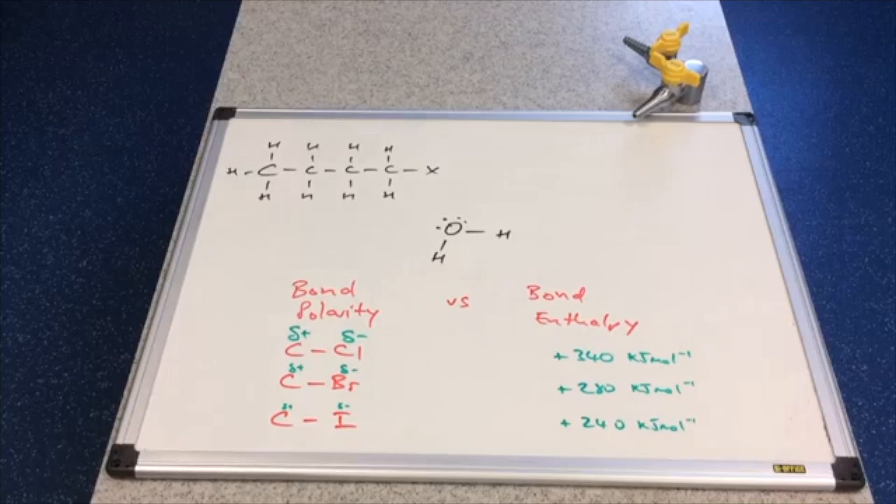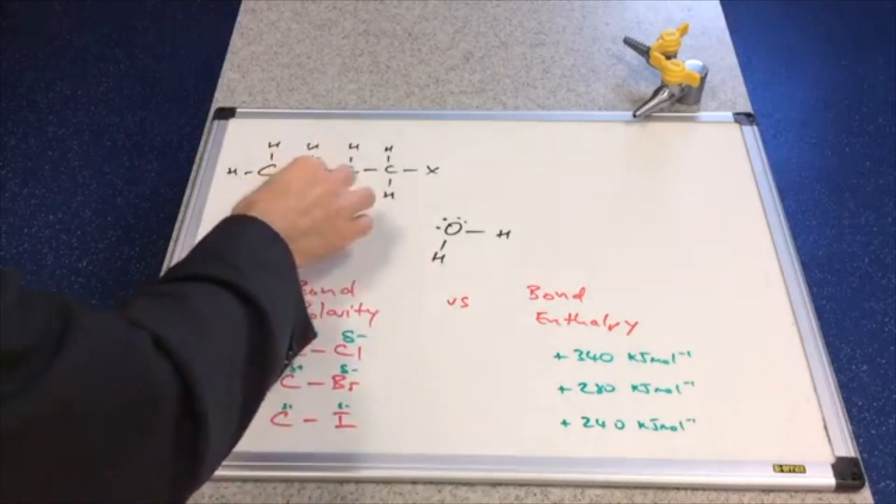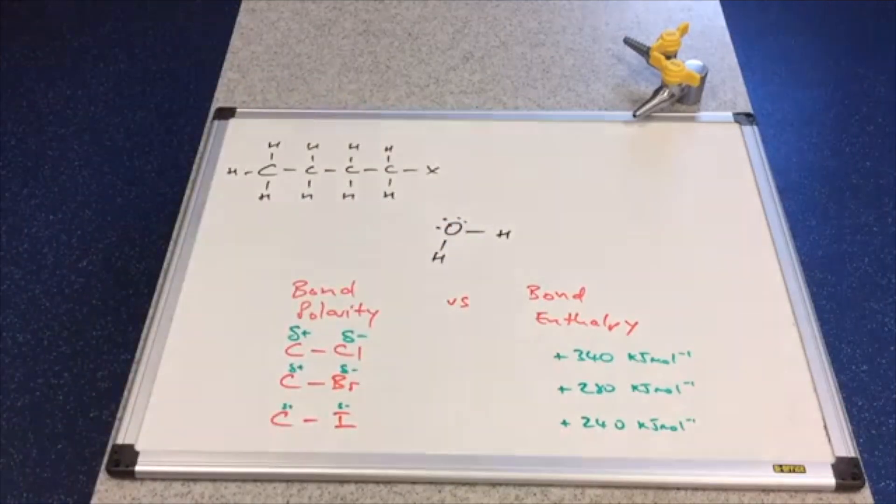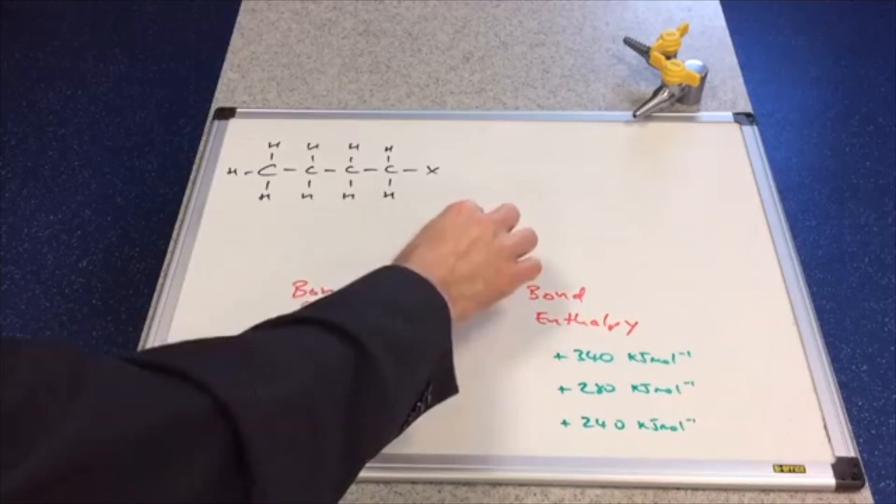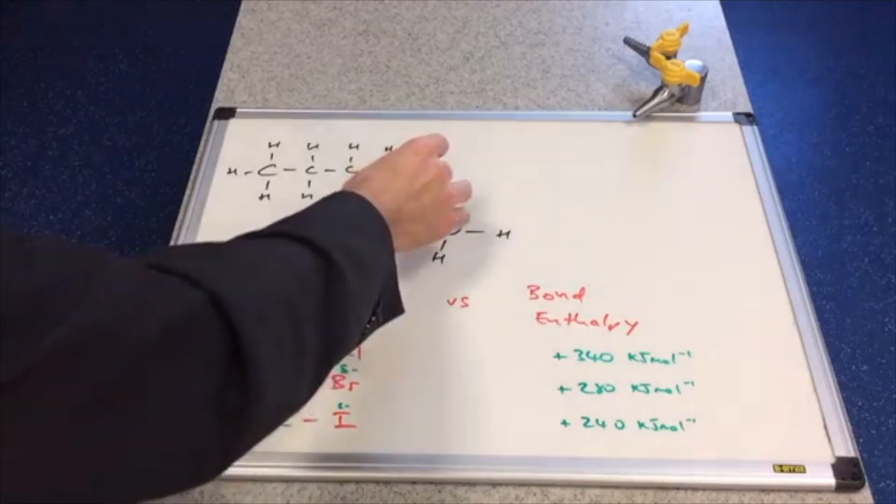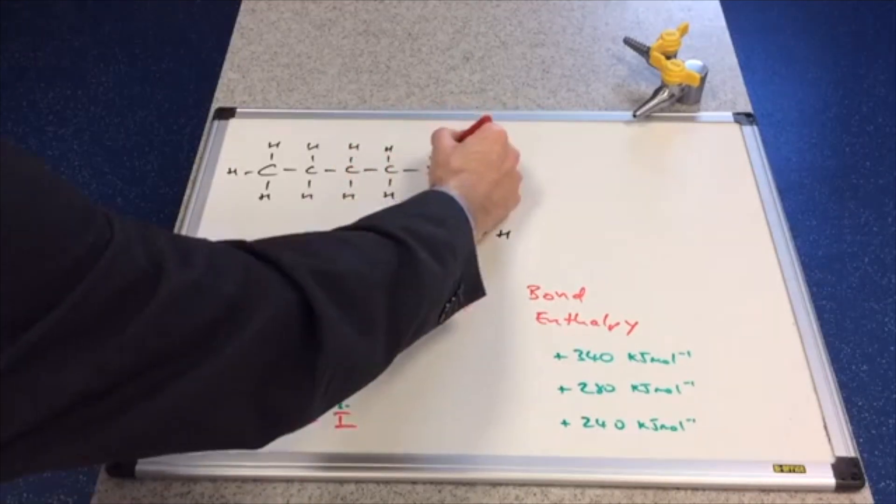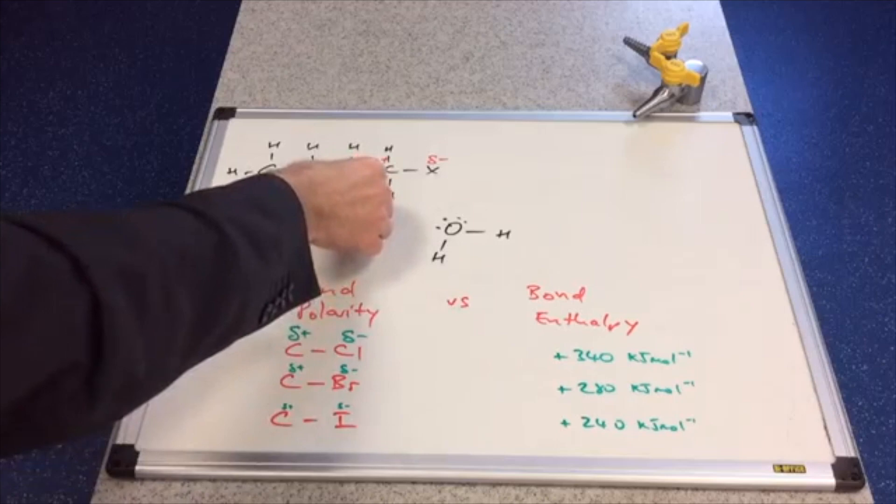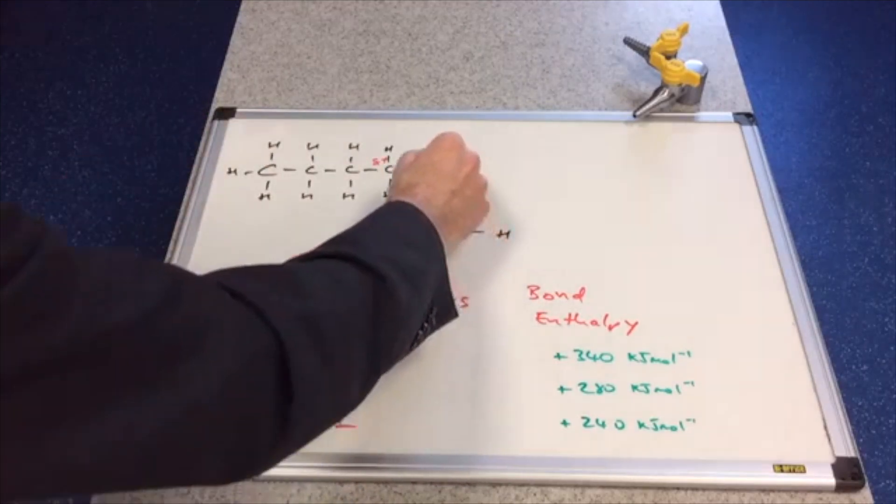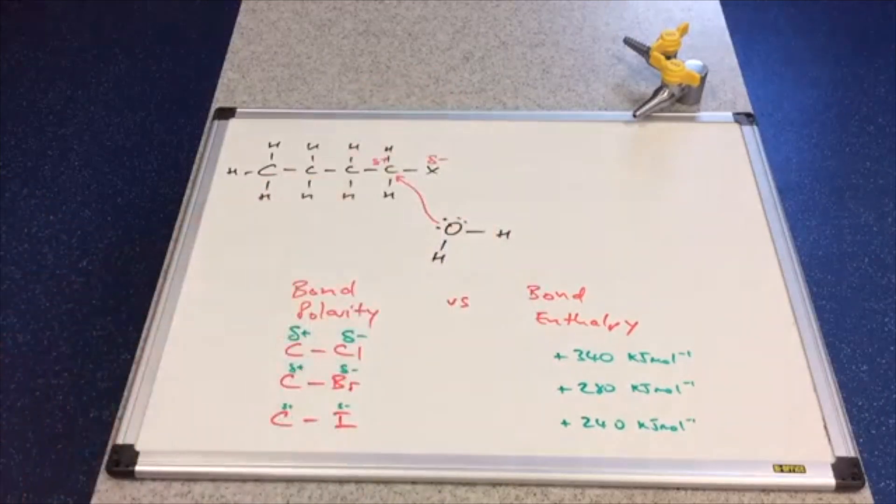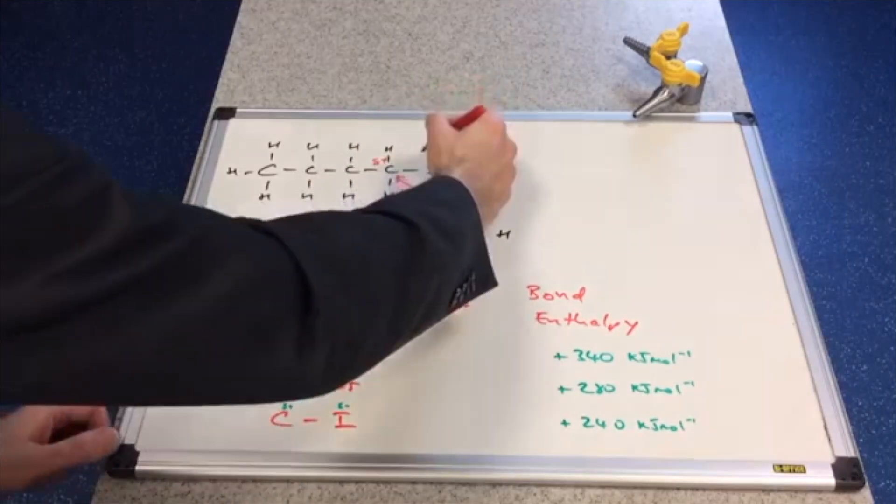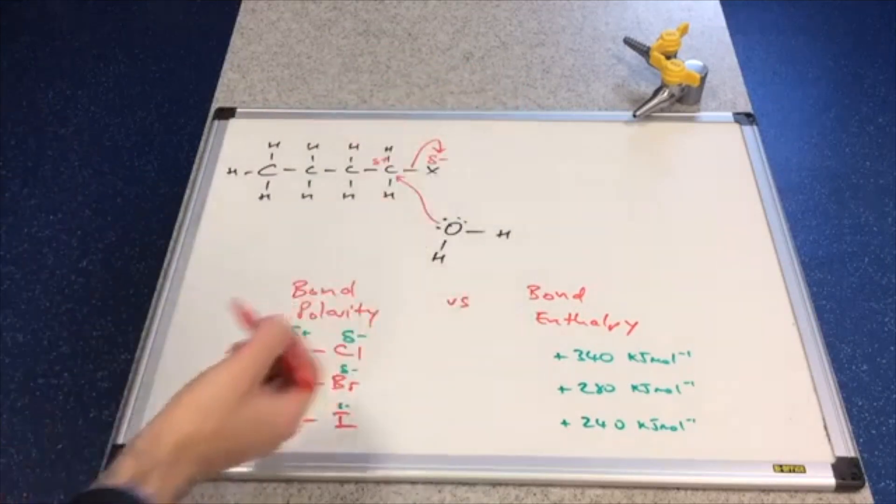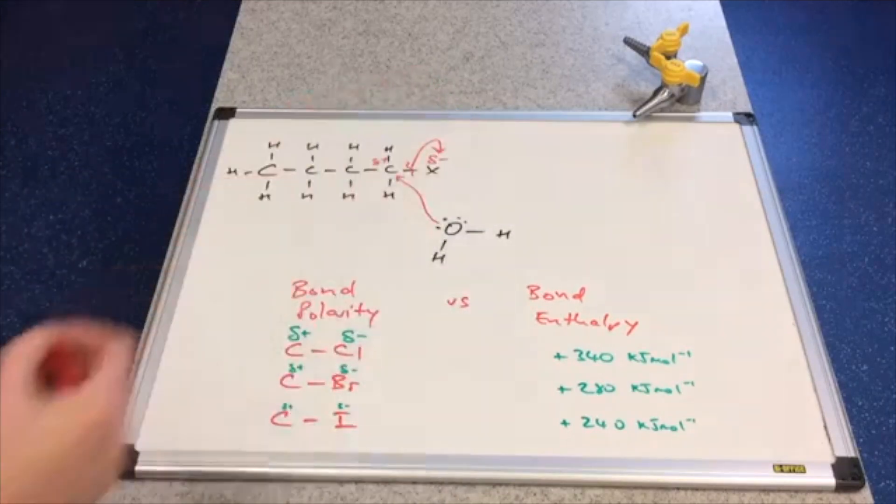We're going to look at the mechanism now for the reaction we've just carried out. I'm representing the haloalkane like this: there's the four carbons and the halogen. I'm not specifying the halogen in the mechanism, just using X. The water molecule - remember oxygen has two lone pairs on it. The halogen is more electronegative than the carbon, so we have a dipole across this bond. This carbon is electron deficient, so a pair of electrons from the oxygen will be attracted to this carbon. That will have a knock-on effect on the pair of electrons in the bond - they'll be completely repelled onto the X and break the bond by heterolytic fission.